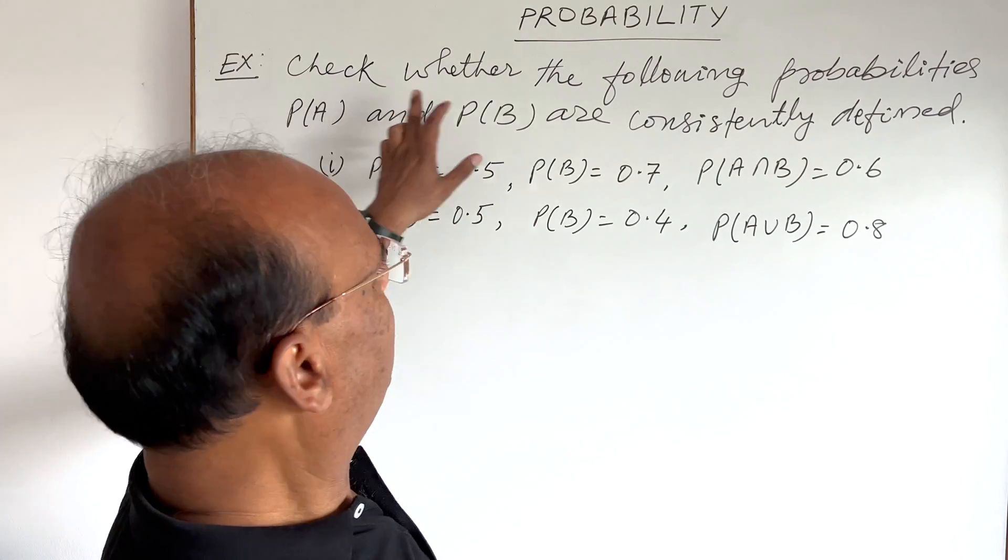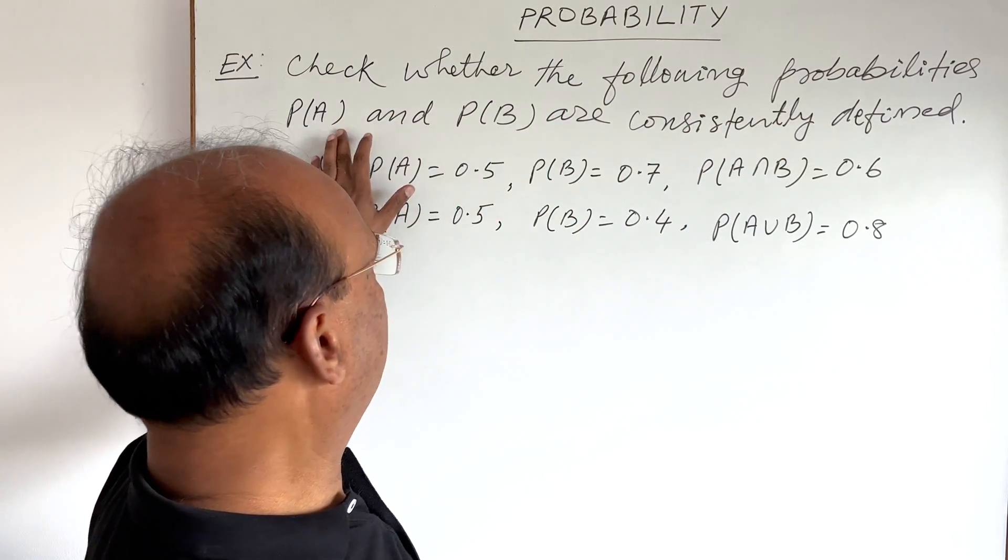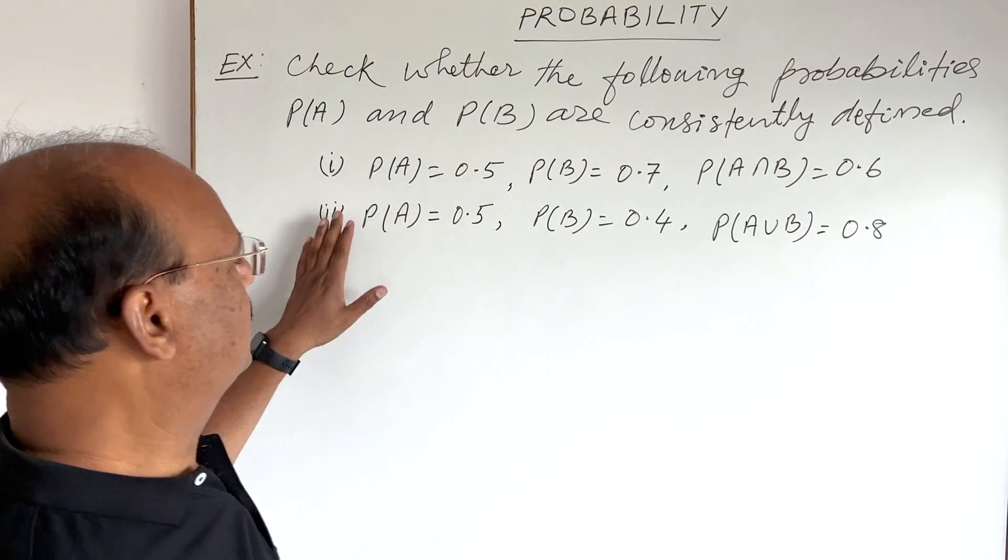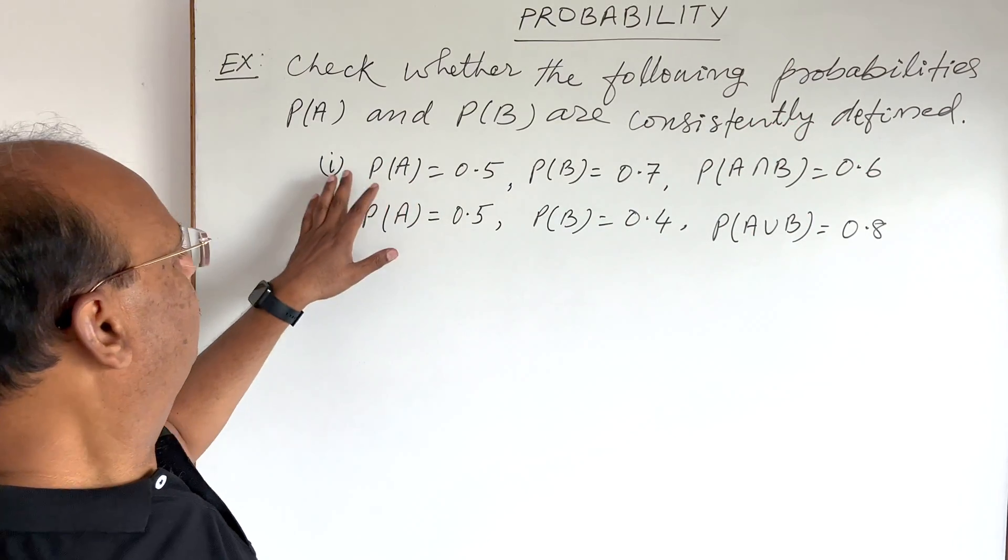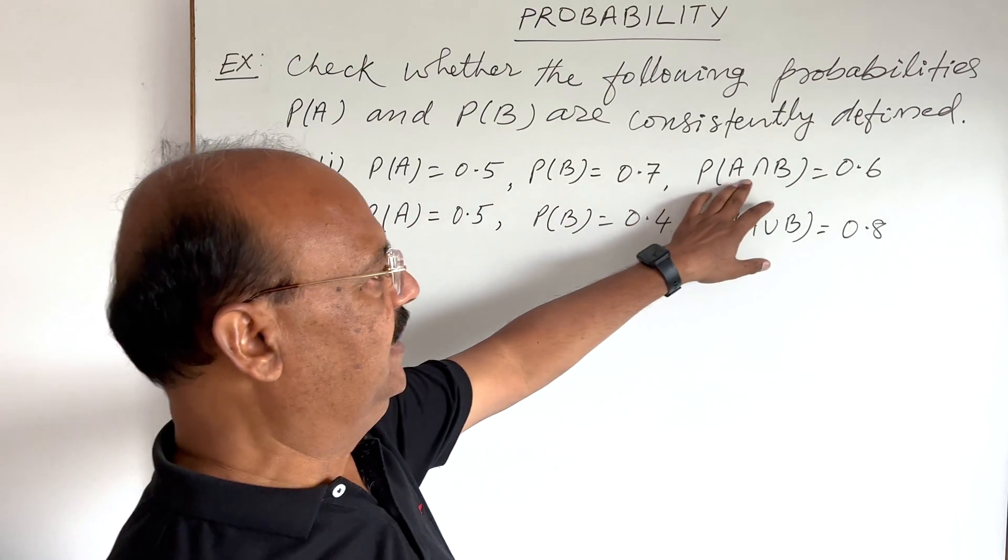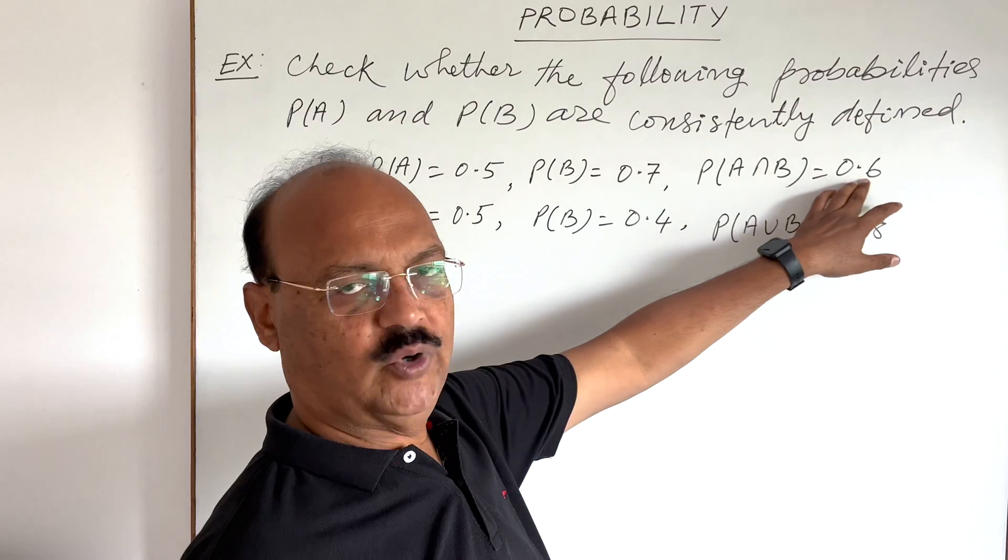Here question is, check whether the following probabilities P(A) and P(B) are consistently defined. Two questions are here, two parts of this question. First, P(A) is 0.5, P(B) 0.7 and P(A intersection B) is 0.6.